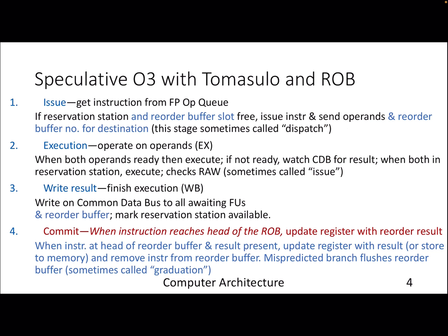We discussed issue, execute, and write as the three stages in basic Tomasulo, but now with the reorder buffer we add the notion of commit. When a particular instruction reaches the head of the ROB, it is ready to be committed — at that point it updates the result into the registers. All speculative instructions transition to the non-speculative path once they reach the head of the ROB.